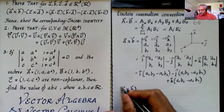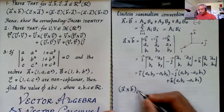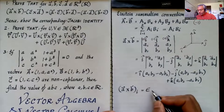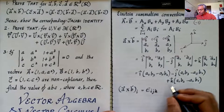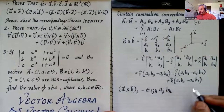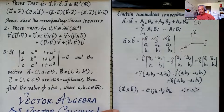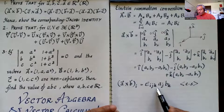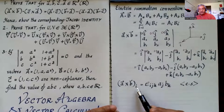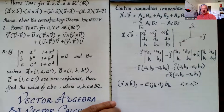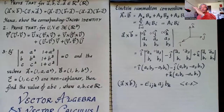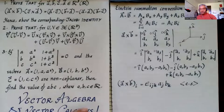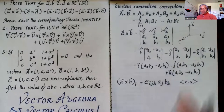The epsilon tensor notation gives the i-th component of a×b as (a×b)_i = ε_{ijk} a_j b_k, using Einstein summation where j and k are summed over (repeated indices) while i is the free index. Here ε_{ijk} is the Levi-Civita epsilon tensor. Let's verify: (a×b)_1 = ε_{1jk} a_j b_k. The only allowed values are j=2, k=3 and j=3, k=2, giving ε_{123} a_2 b_3 + ε_{132} a_3 b_2 = a_2 b_3 − a_3 b_2, which matches the first component of the cross product.